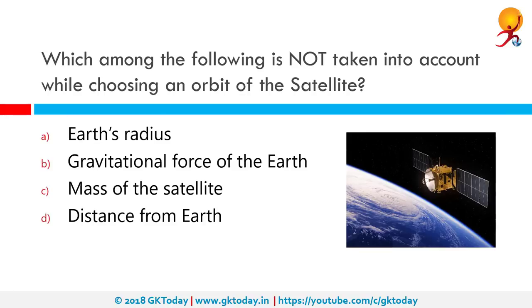Which among the following is not taken into account while choosing the orbit of a satellite? The correct answer is the mass of the satellite, as it has no effect on planning where to put the satellite. The advantage of having a satellite in one orbit rather than another usually depends on its inclination — the angle at which a satellite's orbit is tilted in relation to the Earth's equator. When engineers design a satellite, they must choose an orbit appropriate to its function.